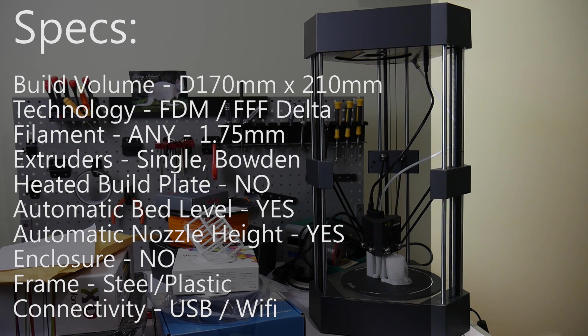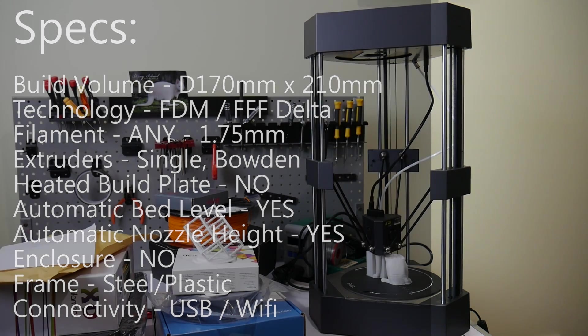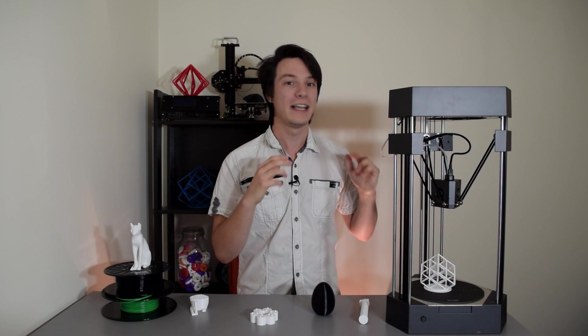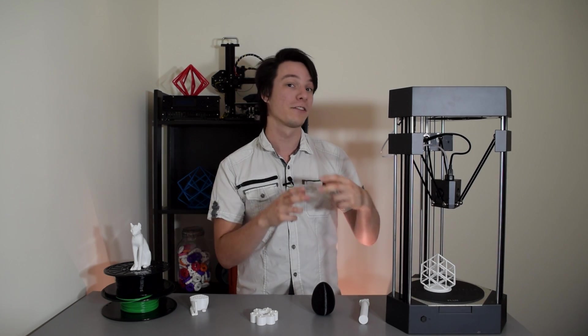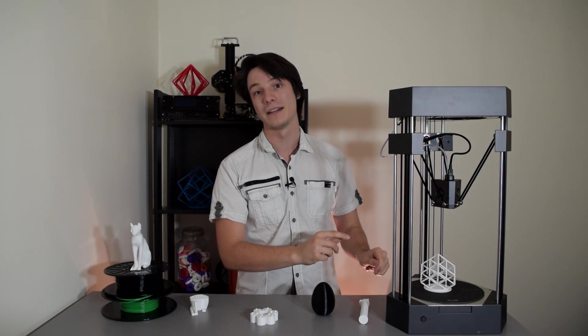The printer has a volume of 170 millimeters in diameter by 210 millimeters in height. Decent enough for most models, but keep in mind unlike Cartesian 3D printers, printing a box of 170 millimeters isn't possible. You actually only get about 120 millimeters by 120 millimeters on the circular print bed.